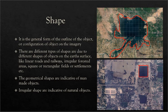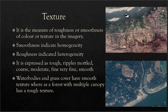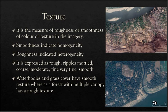Coming to the next element, it is texture. Texture is basically the measurement of roughness or smoothness of a color or texture in the imagery. You can see there are different colors, and they have different textures. Here you can see it is smooth, whereas here it is coarse. Then here there is some particular type of coarseness, and here also there is coarse, and here it is smooth. This basically represents the texture of the imagery.